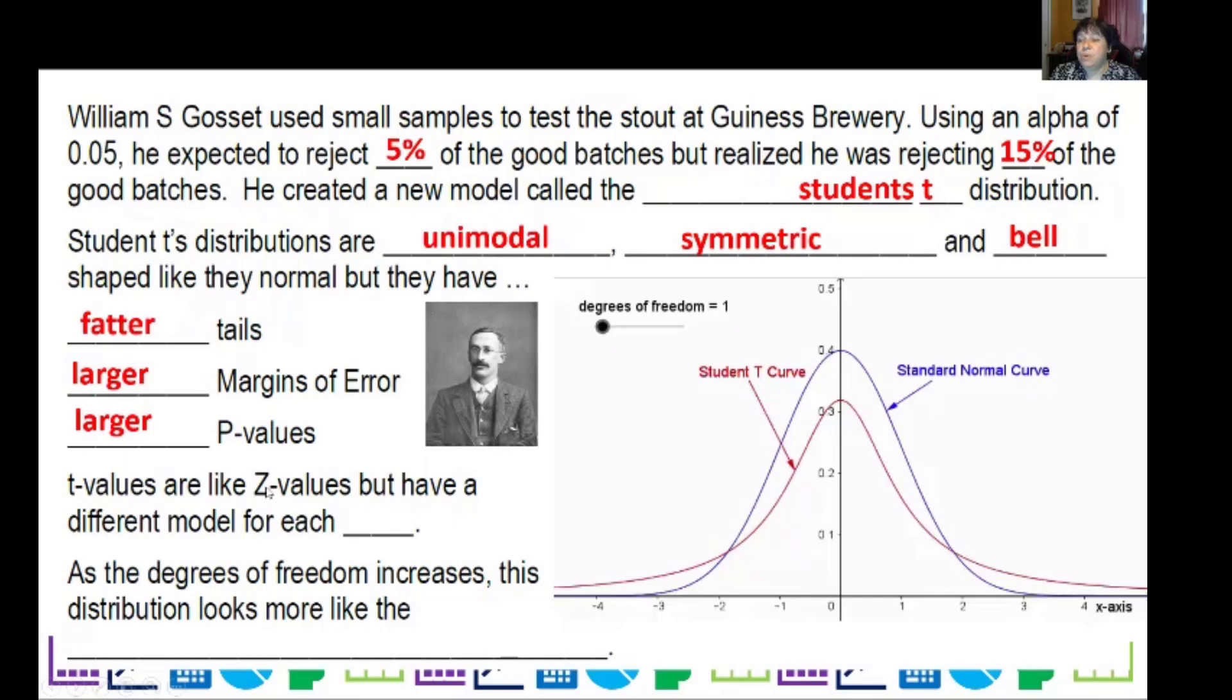Now t-values, or t-scores, are like z-scores, or z-critical values, but have a different model for every degree of freedom. You can see this is degree of freedom one. And when I had it all the way to 40, it looked a lot like a normal distribution. So as the degrees of freedom increases, this distribution looks like the normal.